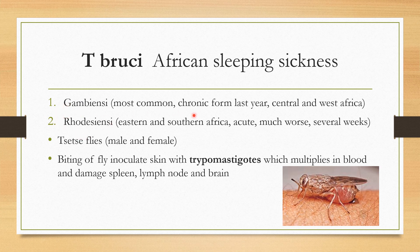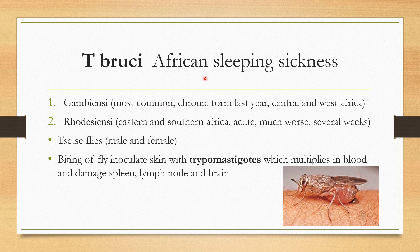The transmission of African sleeping sickness is through the tsetse fly — both male and female. The fly biting causes inoculation of the skin with trypomastigotes, which multiply in the blood and damage the spleen, lymph nodes, and brain.